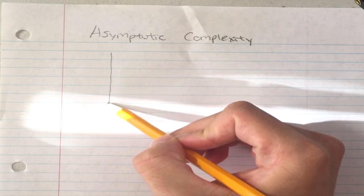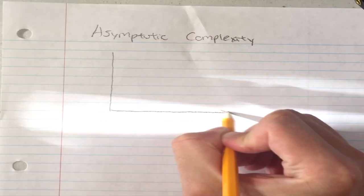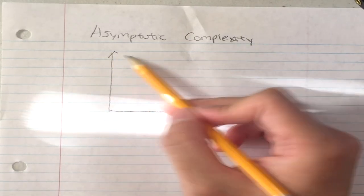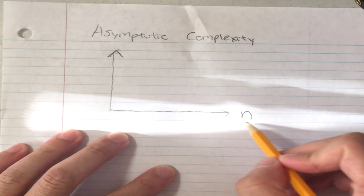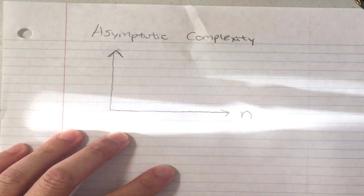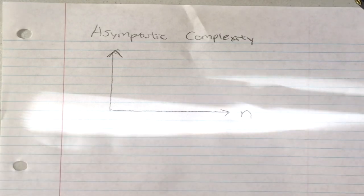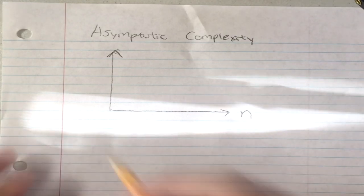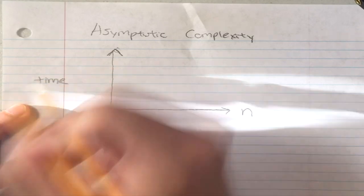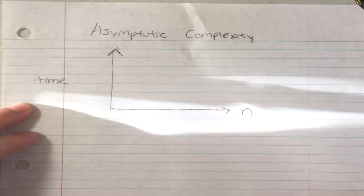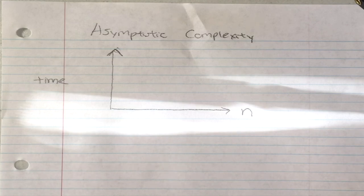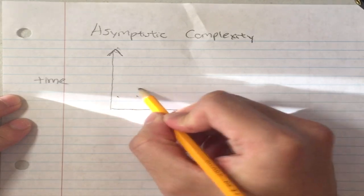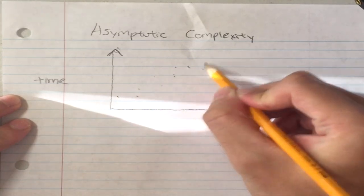What we do is give the algorithm a bunch of data points — this is called n, the input size — so like 10, 20 data points, whatever. You calculate the time it takes for every single data point, measure how long the algorithm takes to run, and then graph every single data point against its time.